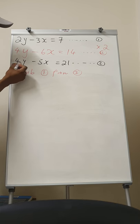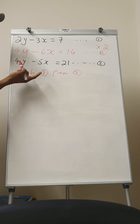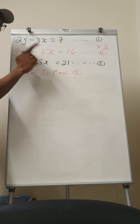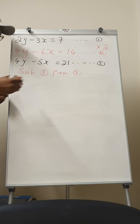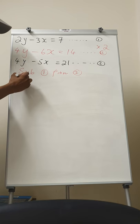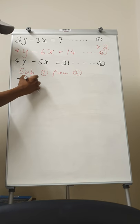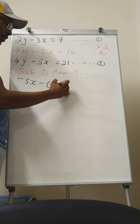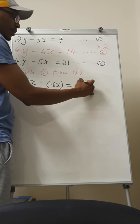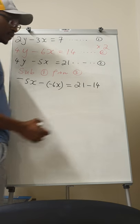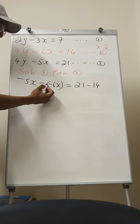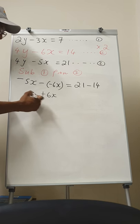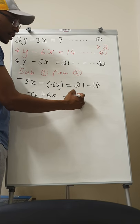We're going to have 4y minus 4y, which is going to be zero. And then we'll have -5x minus -6x equal to 21 minus 14. So in this case, you're going to have 6x minus 5x on this side, which equals 7.